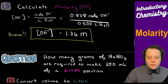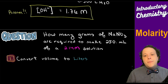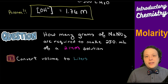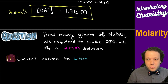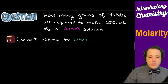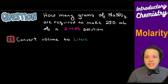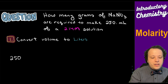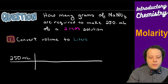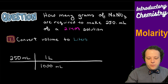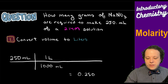Let's do one more. How many grams of sodium nitrate are required to make a 250 milliliter solution that is 2.14 molar? First, figure out your volume — 250 milliliters — and convert it to liters: 250 divided by 1,000 gives 0.250 liters.